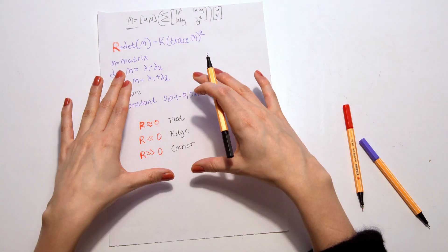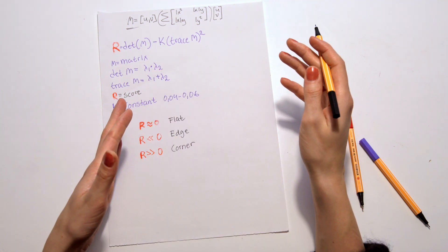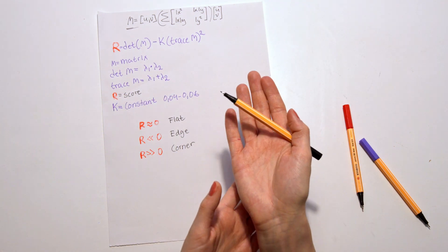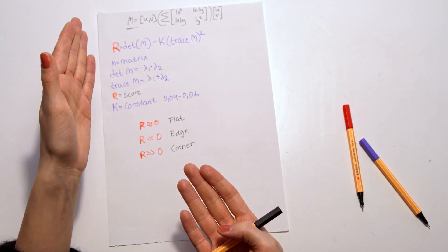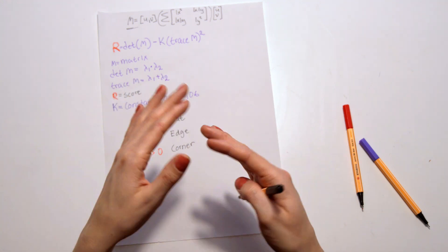This is what you want to get from first getting the function, making an approximation of the function so it's easier to calculate. Then we calculate R values to also understand if it's flat, if it's an edge, or if it's a corner.